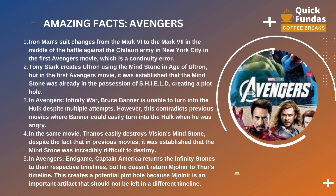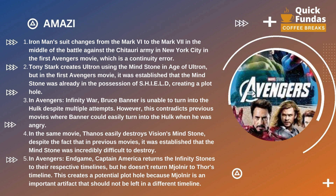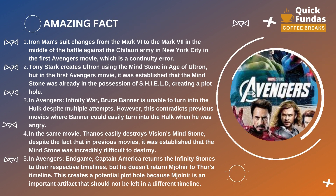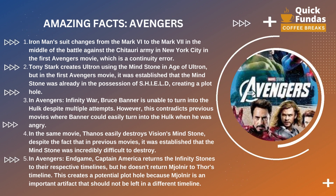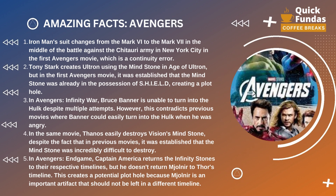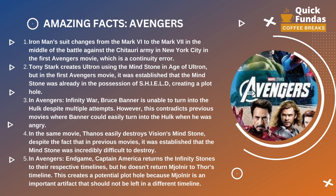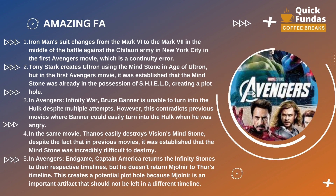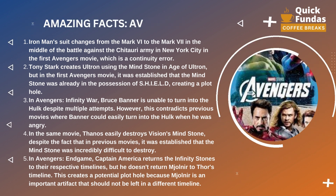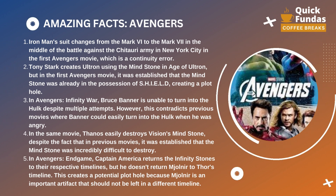First up, in the first Avengers movie, Iron Man's suit changes from the Mark VI to the Mark VII in the middle of the battle against the Chitauri army in New York City. This is a continuity error, as it's unlikely that Tony Stark could have had time to change suits in the middle of a battle.